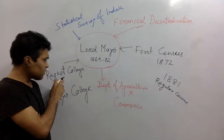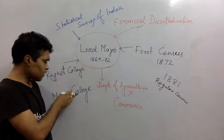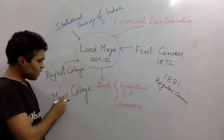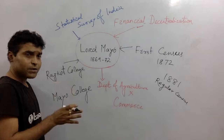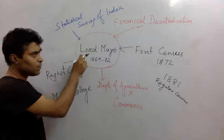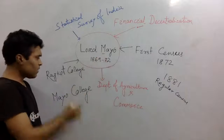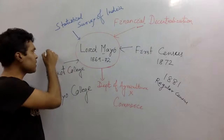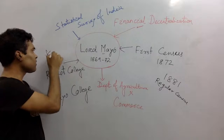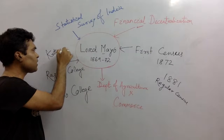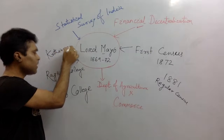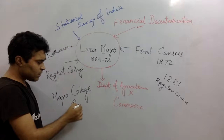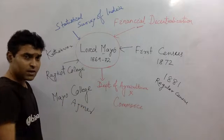Two colleges were established during the tenure of Lord Mayo: Rajkot College and Mayo College. This Rajkot College is in Kathiawar, and Mayo College is in Ajmer, Rajasthan.